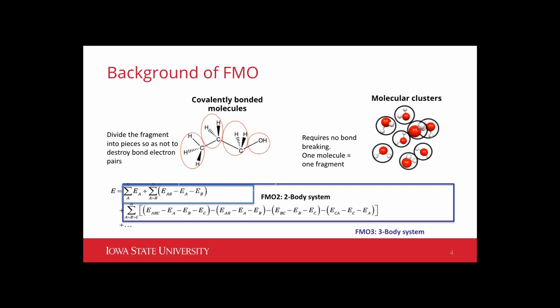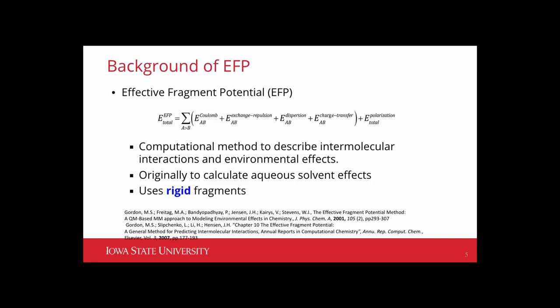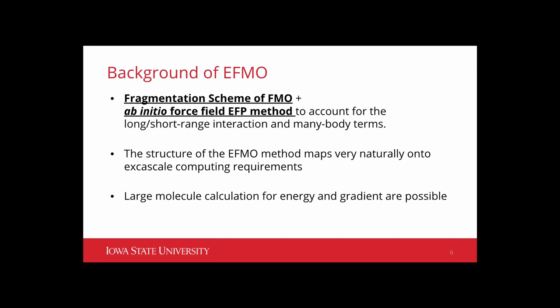First I'll go over the background of FMO. The FMO method was first released in GAMESS in 2004. FMO is a QM method capable of evaluating the properties of a large molecular system by fragmenting in two ways: first, covalently bonded molecules are divided into fragment pieces so as not to destroy the bond electron pairs; second, a molecule itself can be a fragment as a whole. FMO can do two-body and three-body interaction energy calculations, and analytic gradient is also available along with other ab initio methods in GAMESS.